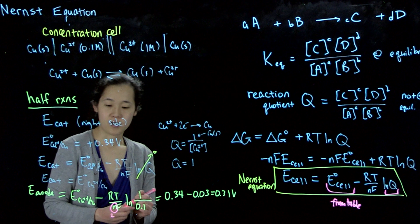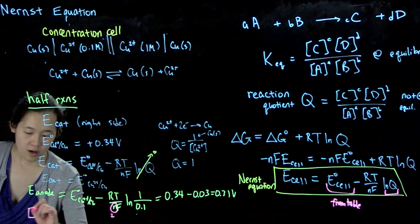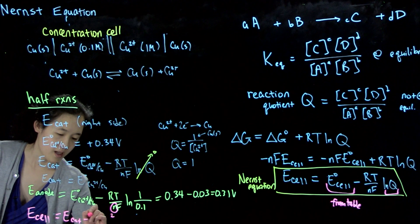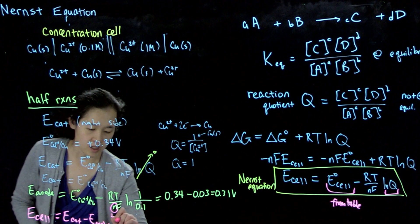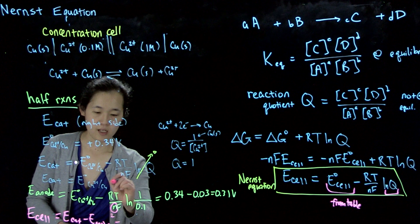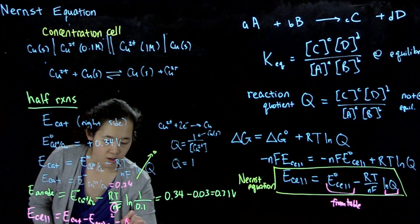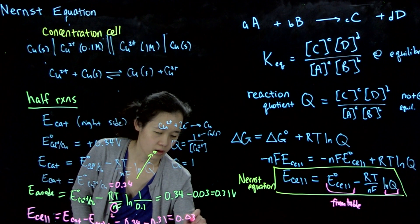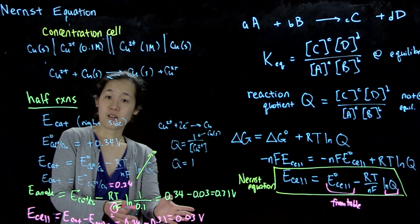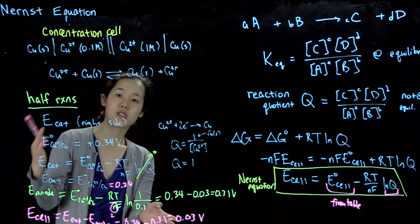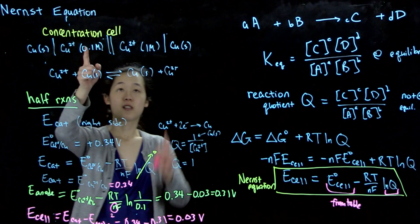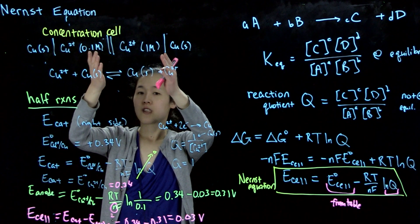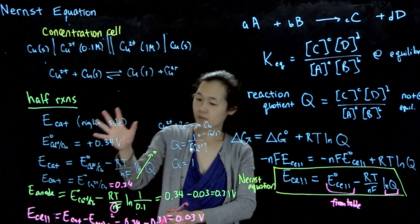Our final cell potential under non-standard conditions is E_cell equals E_cathode minus E_anode, which equals 0.34 minus 0.31, giving us 0.03 volts. That's how we calculate the cell potential for a concentration cell under non-standard conditions. By having this difference in concentrations between the two sides, we can still have an overall voltage that drives current.